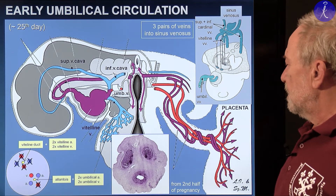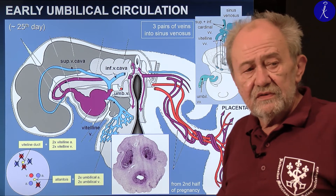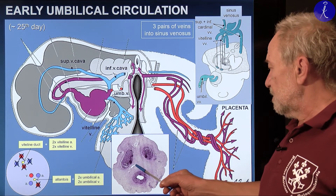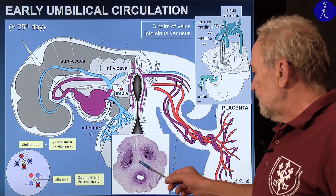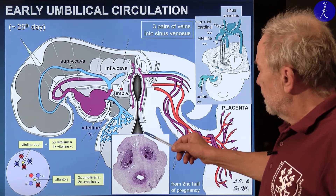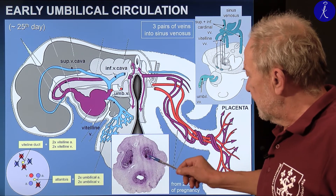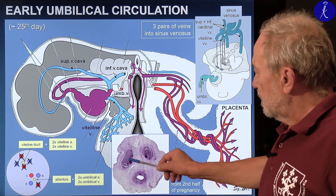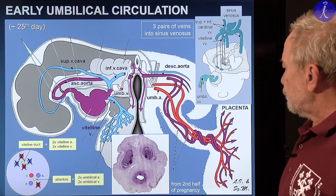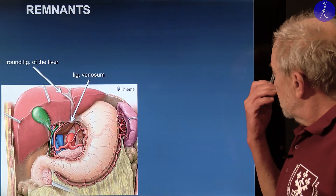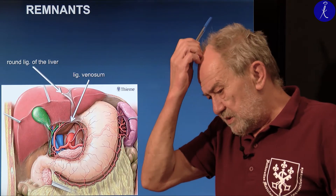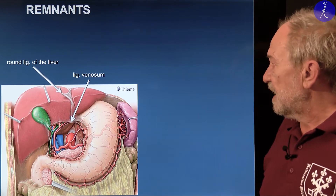This is the slide of the umbilical cord — you've seen it in the first semester. In the first semester you concentrated on Wharton's jelly between the vessels; now you should also recognize the amniotic epithelium and vessels inside. Two of them are the arteries and one is the left umbilical vein.